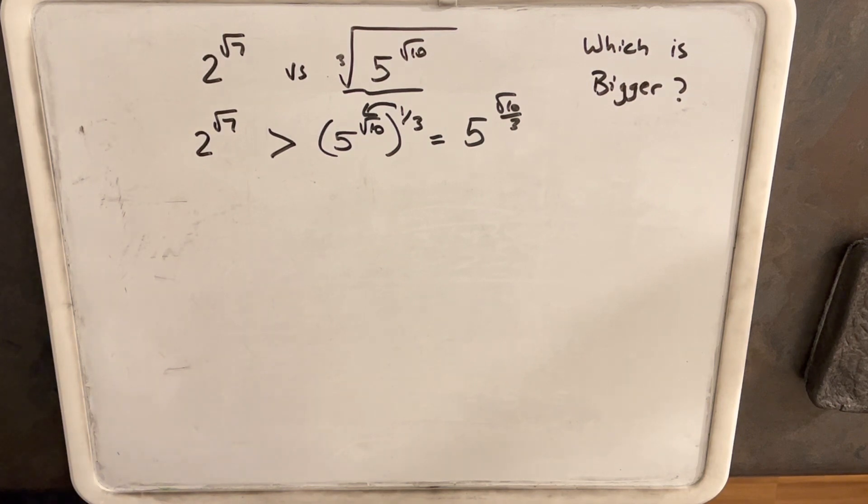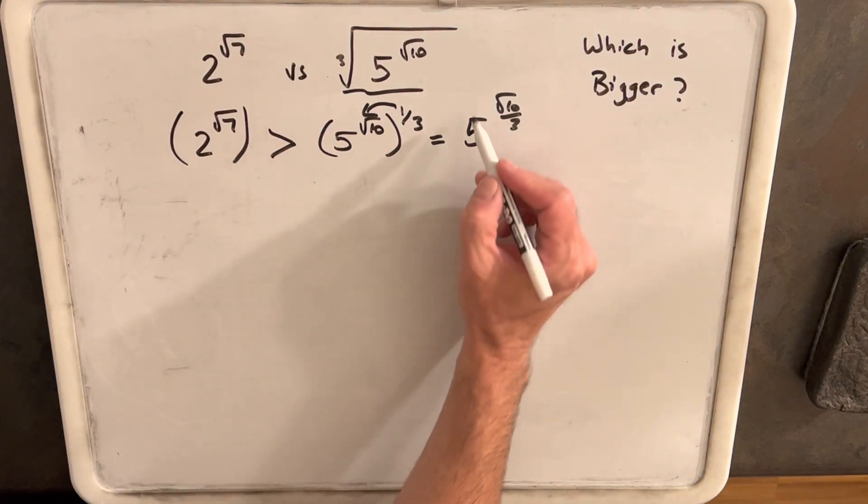Now, for the next step, I want to address that. We don't want radicals in the exponent if we can help it. So what I'm going to do is let's multiply both sides.